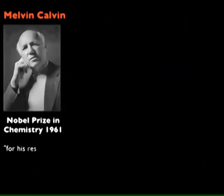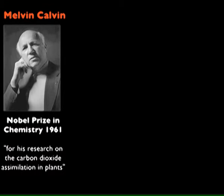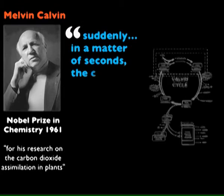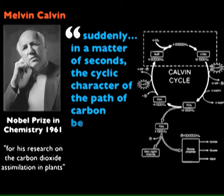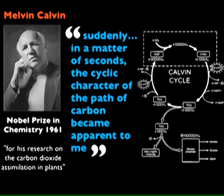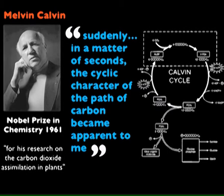Melvin Calvin won a Nobel Prize for Chemistry for the Calvin Cycle. He discovered it whilst waiting in a car park for his wife. 'Suddenly in a matter of seconds the cyclic character of the path of carbon became apparent to me.' He was talking about the basis of photosynthesis — and he wasn't even thinking about it at the time.